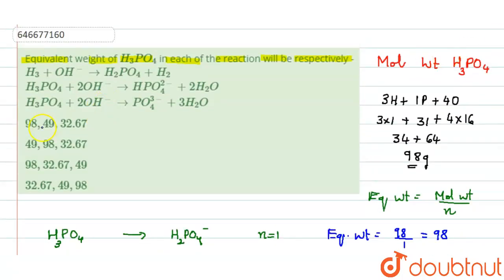So let us see the options. In option 1, first is 98, second is 49, and third is 32.67. We have this option in option A itself. Therefore option A is the right choice. Thank you.